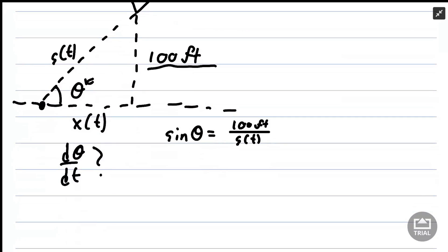Since we're interested in the rate of change of this angle theta, I'm going to differentiate this on both sides with respect to time. The derivative of sine is just cosine, and from the chain rule we have a factor of dθ/dt.